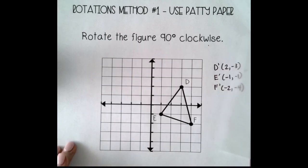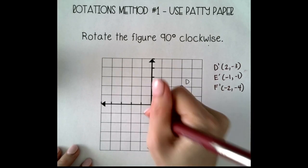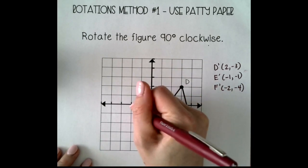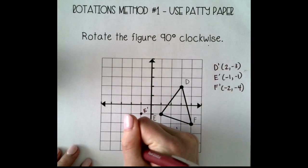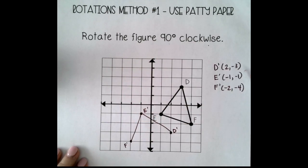Then I'm going to remove the patty paper and I'm going to plot these points on my actual paper. There's D prime, E prime, F prime. Then connect them, and there you go.